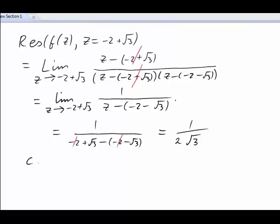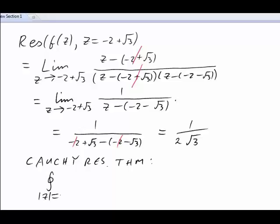Okay, so now the Cauchy residue theorem says that the integral around the contour, in this case it was mod z equals one of f of z dz, is two pi j times the sum of the residues of all the poles that are inside. But there was only one pole inside and we've just found the residue. It's one over two root three. The twos cancel, so that simplifies to j pi over root three.